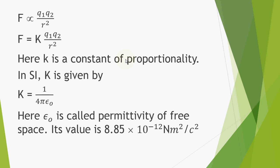the value of k in SI is given by k equals 1 over 4πε₀. Here ε₀ is called the permittivity of free space. Its value is 8.85 × 10⁻¹² N·m²/C². However, this constant will be replaced by another constant if we change the medium because as we have stated earlier, the value of k depends on the medium between the two point charges.